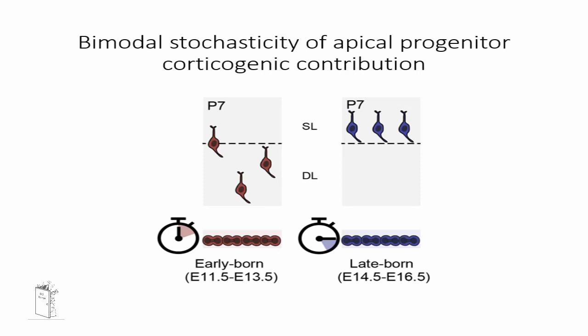Summarizing our results: early born cortical neurons can assume a different set of identity and laminar position which is not tightly correlated to the time of their birth, while late born cortical neurons assume a laminar position and identity more tightly correlated to their time of birth. What we still don't know is what is exactly the source of variability of the identity of early born neurons.